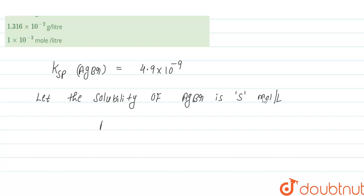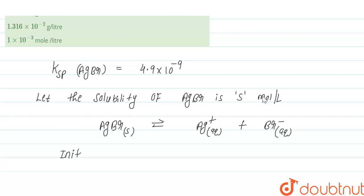AgBr (solid) dissociates into Ag⁺ (aqueous) plus Br⁻ (aqueous). Initially it is one; when one mole of AgBr dissociates, one mole of Ag⁺ is formed and one mole of Br⁻ is formed. So when it dissociates s, it forms s of Ag⁺ and s of Br⁻.